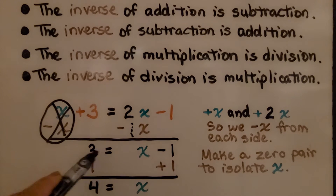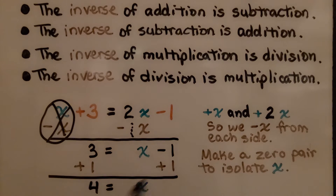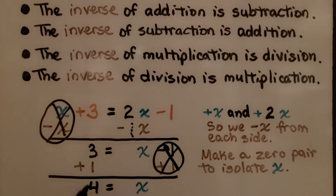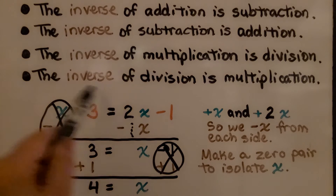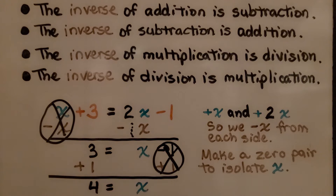So now we have 3 is equal to x minus 1. We have a minus 1, so we're going to use a plus 1 to get this x by itself, to isolate it to one side. We do a plus 1 on both sides of the equation. This minus 1 plus 1 makes a zero pair and gets eliminated. On this side we have a 4, so we know that 4 is equal to x. Since these were positive variable terms, we did minus x. And since this was a negative 1, we did a plus 1 to isolate x alone on one side, which meant we had to do a plus 1 on this side also to keep it balanced.